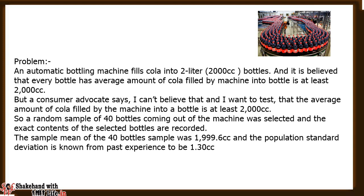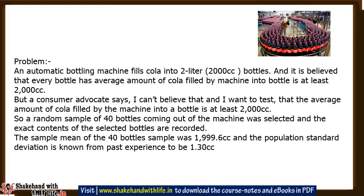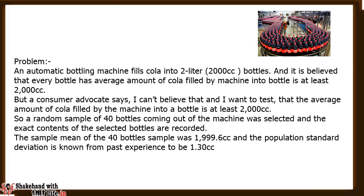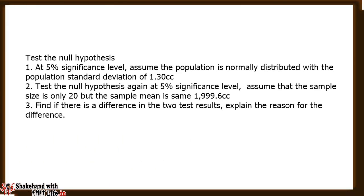A random sample of 40 bottles coming out of the machine was selected and the exact contents were recorded. The sample mean of the 40 bottles was 1999.6 cc and the population standard deviation is known from past experience to be 1.30 cc. For the given problem, test the null hypothesis at an alpha of 5 percent, assuming the population is normally distributed with a population standard deviation of 1.30 cc.